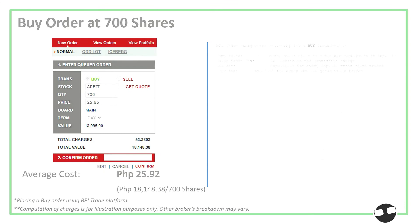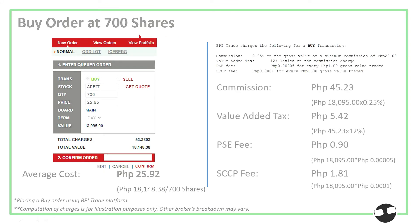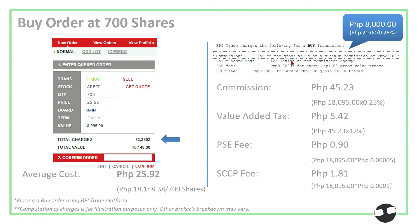Now let's try to buy above the minimum board lot — this time 700 shares. The total value is ₱18,095, total charges are ₱53, and the total value is ₱18,148. The adjusted average cost is now ₱25.92. Comparing this to buying 100 shares where the average cost was ₱26, buying more shares above the minimum brings the average cost lower, to around ₱25.92.